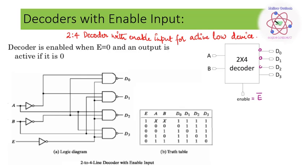In the second case we use a 2-to-4 decoder again, but here we are indicating the enable input for an active low device. In the truth table, when the enable input is equal to 1, irrespective of the input given, the output will be all 1s. Whereas when the enable pin is 0, depending upon the input given, the corresponding output bit will be equal to logic 0. Since it is an active low device, I need to bubble the output.